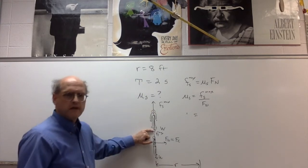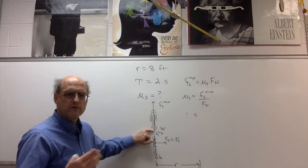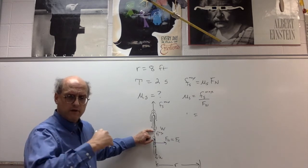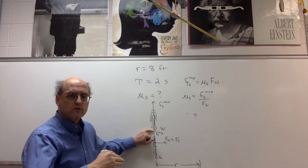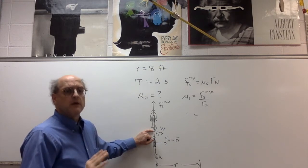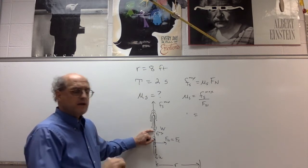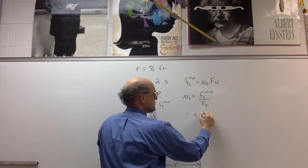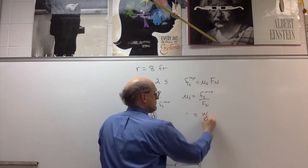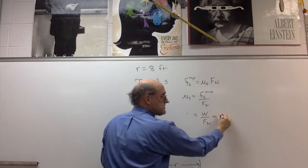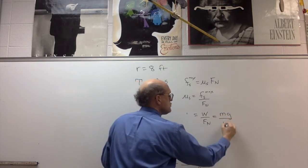I'm going to start with an equation that will introduce the coefficient of static friction: maximum force of static friction equals coefficient of static friction times the normal force. Solving for μ_s: maximum static friction over normal force. The maximum force of static friction has to equal the weight from Newton's second law — sum of forces equals ma, but vertical acceleration is zero, so net force is zero.